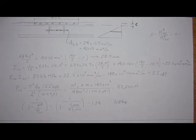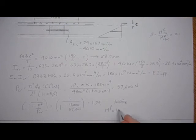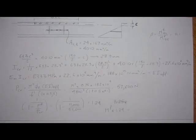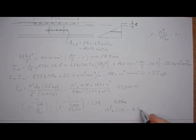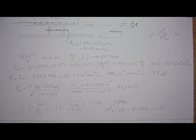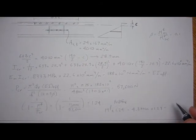So it's going to be 1 over 1 minus P factored was 11,000 Newtons divided by 57,600 Newtons, comes up to be 1.24. So we amplify the factored moment, we take this and we multiply the factored moment by 1.24.